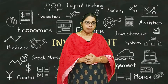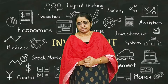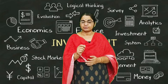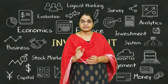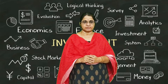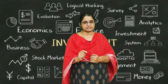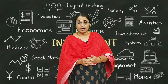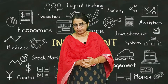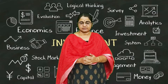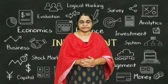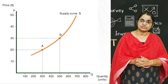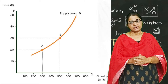The next topic is market supply schedule. The horizontal summation of individual supply schedules is known as market supply schedule. We add individual sellers' supply schedules to get the market supply schedule. The graph of the market supply schedule is called market supply curve.